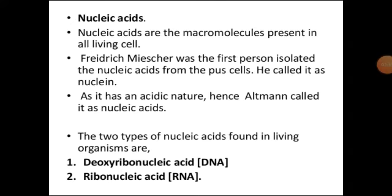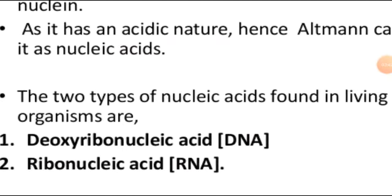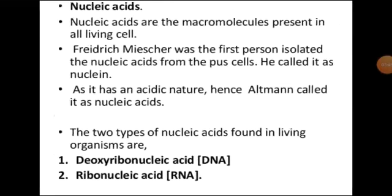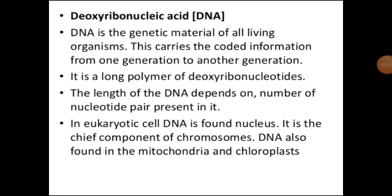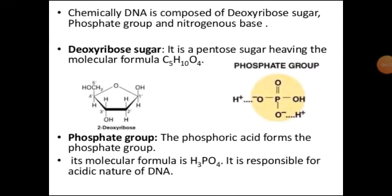There are two types of nucleic acid found in living organisms: DNA (deoxyribonucleic acid) and RNA. DNA is a long polymer and is a condensation product of three chemicals — a pentose sugar deoxyribose, phosphoric acid, and nitrogenous bases (purines and pyrimidines). The length of DNA is usually defined as the number of nucleotides or base pairs, which is a characteristic feature of an organism.